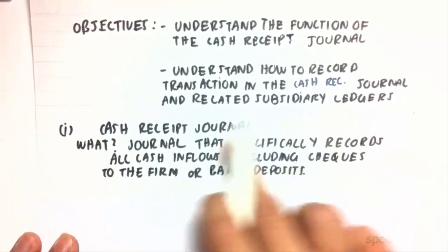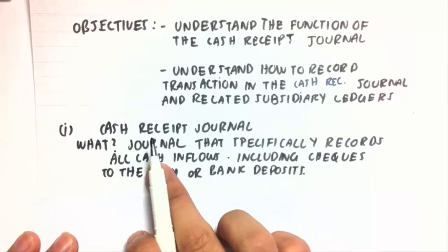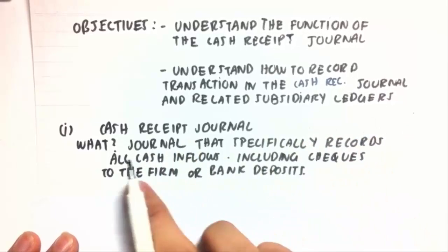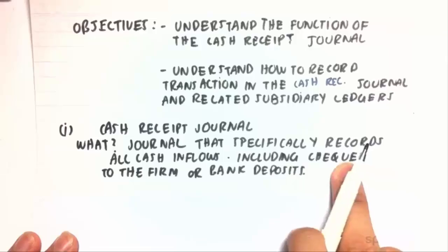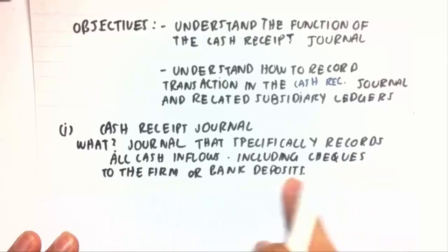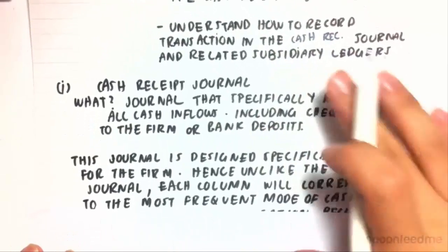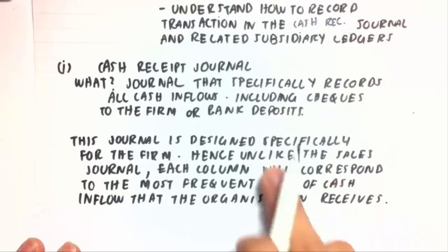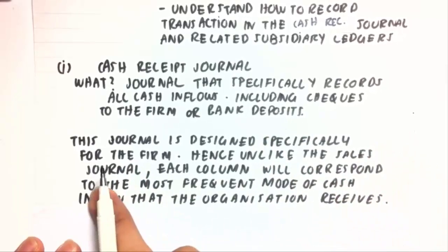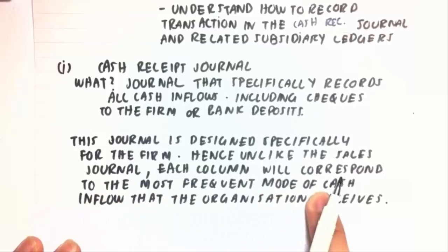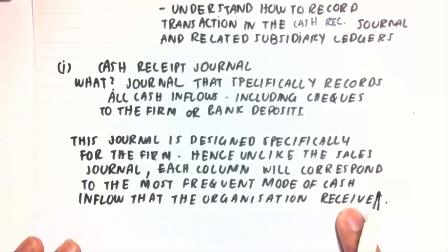So what is the cash receipt journal? The cash receipt journal is a journal that specifically records all cash inflows, including checks to the firm or bank deposits. This journal is designed specifically for the firm. Hence, unlike the sales journal, each column will correspond to the most frequent mode of cash inflow that the organisation receives.